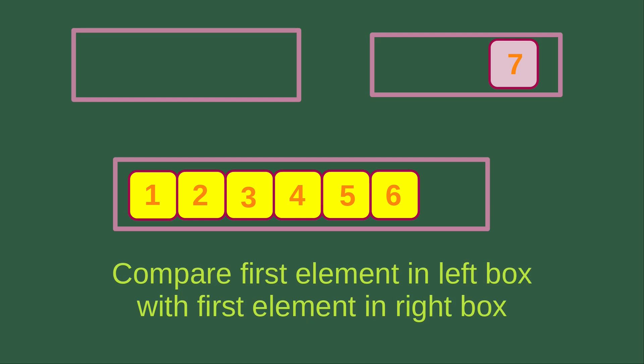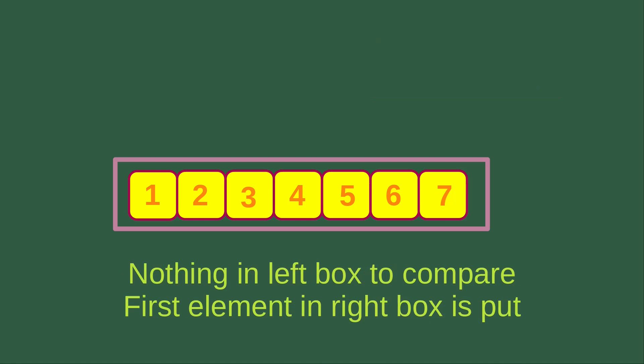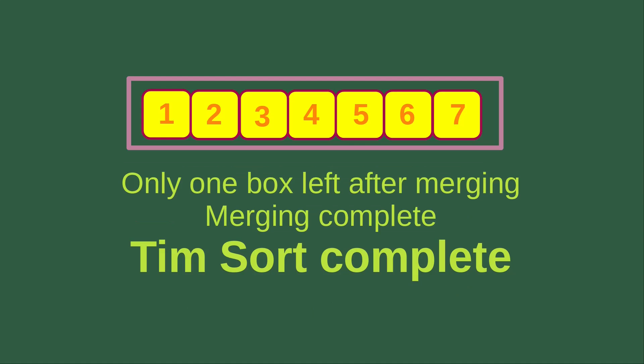We compare the left box, which now has nothing, with the right box, which has 7. Since there's only one number to compare, we just put 7 into the bottom box. The merging process is now complete. After doing the insertion sort and the merging process, the TimSort process is complete. Thank you for walking through the algorithm with me. If you have any questions, please leave a comment below. If you like this video, please give a like and subscribe to my channel. Thank you for watching.